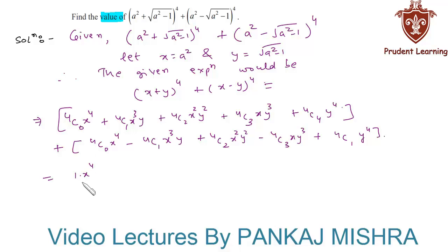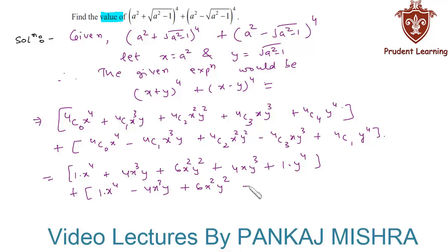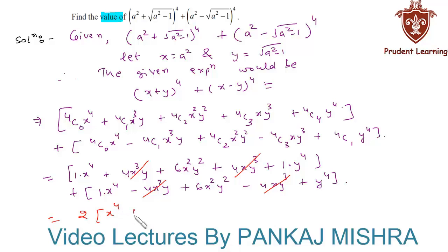Substituting the binomial coefficients: 4C0=1, 4C1=4, 4C2=6, 4C3=4, 4C4=1. Adding both expansions together, 4x³y cancels with -4x³y, and -4xy³ cancels with 4xy³. We are left with 2 times (x⁴ + 6x²y² + y⁴).